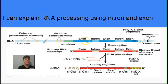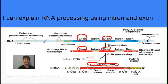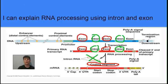Our next learning target is to explain RNA processing using the terms intron and exon. Originally we have a DNA molecule that is transcribed to produce RNA. Within the transcribed portion of the DNA gene, there are regions called exons and regions called introns. An exon — the exciting part of the DNA — leads to messenger RNA that is actually used in the coding segment, giving information that puts amino acids into a protein. The intron sequences are going to be spliced out of the primary RNA transcript by something called a spliceosome.